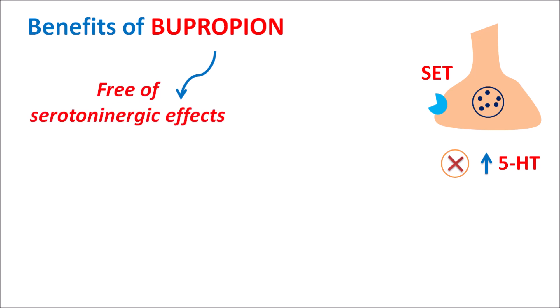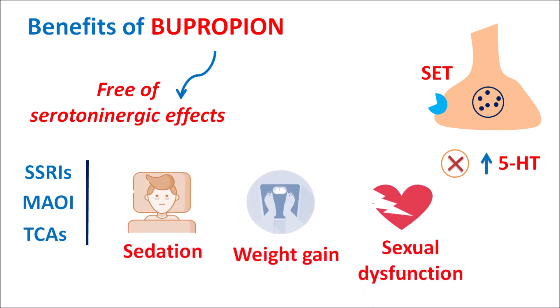This drug is therefore free of serotonin side effects. Drugs like SSRIs mainly increase 5-HT levels, resulting in serotonin syndrome and related side effects. Similarly, drugs like MAO inhibitors and tricyclic antidepressants increase levels of both norepinephrine and 5-HT, and also block other receptors such as histamine and alpha-1 receptors — producing side effects such as sedation, weight gain, and sexual dysfunction. Bupropion does not show these side effects because it does not increase 5-HT levels, does not block H1 receptors, and does not block alpha-1 receptors.